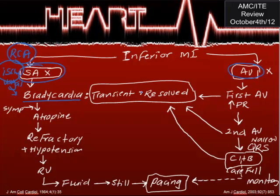Bradycardia is usually transient and resolves on its own. If it is persistent, you can use atropine. The dose of atropine is 0.5 to 1 mg, and you can increase the dose up to 3 mg. For inferior MI, everything is generally transient because it's usually a small area of myocardium involved.